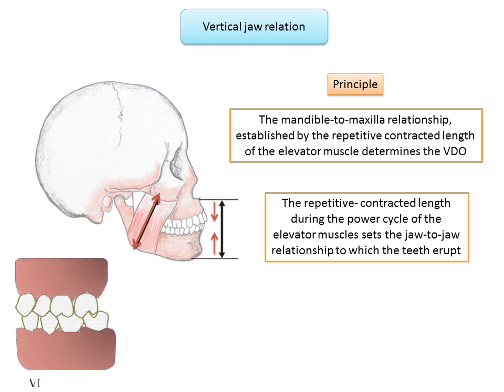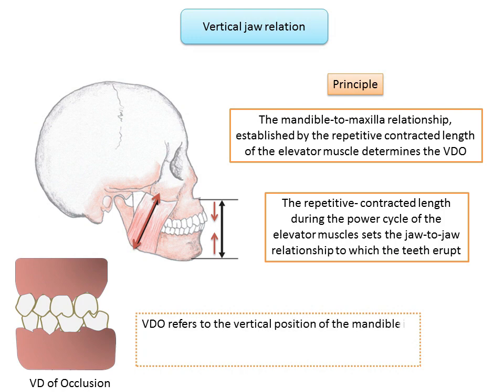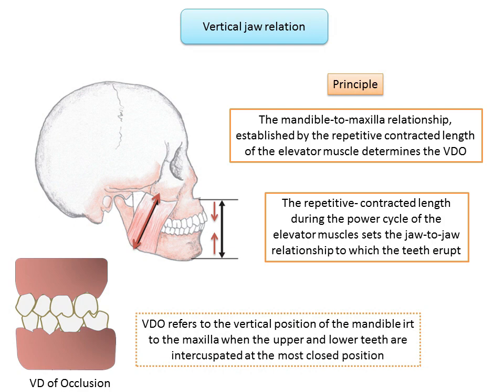The vertical dimension of occlusion (VDO) refers to the vertical position of the mandible in relation to the maxilla when the upper and lower teeth are intercuspated at the most closed position. Even though VDO occurs when the teeth are fully articulated, the teeth are not the determinants of vertical dimension. Rather, the position is determined by the space available between the fixed maxilla and the muscle-positioned mandible. The elevator muscle is the guiding force determining VDO.